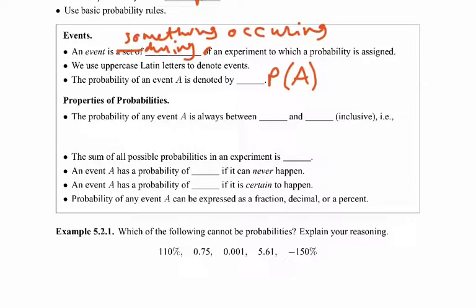The probability of an event A is always going to be between 0 and 1. An event A has a probability of 0 if it could never happen. An event A has a probability of 1 if it is certain to happen. These are also equivalent to percentages — 1 would be 100% chance, 0 would be 0% chance.